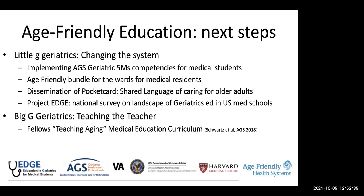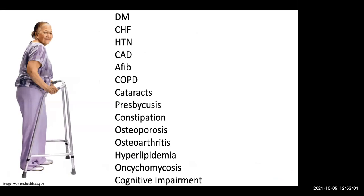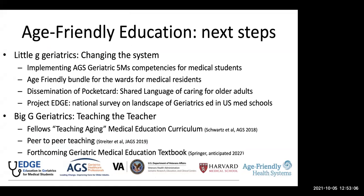That brings us to the end of what I wanted to share. We've covered the concept of age-friendly education, big G and little G geriatrics, and examples from medical student, resident, and interprofessional education. What we're working on next is the little G geriatrics of really trying to change the system — looking at implementation of the new AGS geriatrics competencies, spreading this age-friendly bundle for the wards, continuing to disseminate the pocket card, and conducting a national survey called Project Edge to get a better sense of what's actually happening in U.S. medical schools, since the last survey was almost 20 years ago. On the big G side, we have a fellows medical education curriculum, peer-to-peer teaching with surgical residents, and a forthcoming textbook on geriatric medical education.